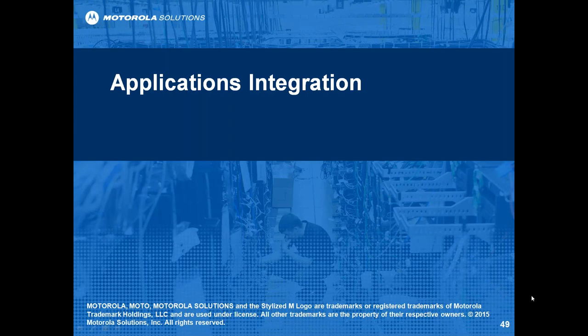Thanks Grant. As Grant stated, we're going to talk about the applications we can run with the Moto Turbo solutions to give us a whole suite of functionalities — data functionalities within the system. However, to actually run an application, there are a few things you need to do at an infrastructure level to allow these applications to communicate on your network. So the first couple of slides talk about some of the requirements at an infrastructure level for the application integration.